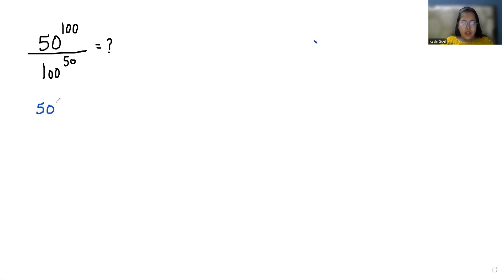50^100 we can write it as 50^(50+50). By 100 we can write it as (50 × 2)^50.